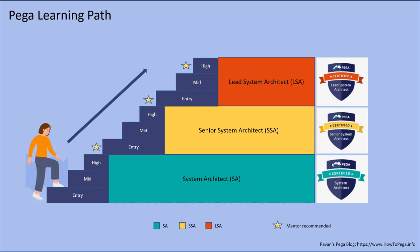On PEGA PDN — the PEGA developer network — your record will be maintained, which is useful when someone verifies your background with respect to PEGA. For example, I gave my certified system architect exam back in 2013, so whenever someone verifies my credentials they can check the version I was certified on, indicating when I started in PEGA. As an entry-level system architect it's always good to cover the system architect course, get certified, and then slowly start getting hands-on experience on applications.